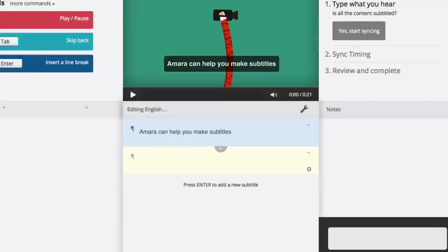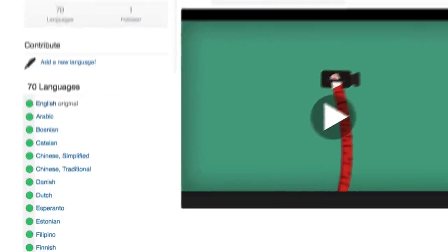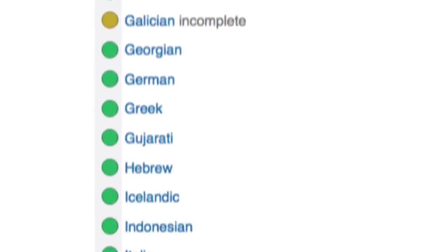First, if you're a video creator, Amara can help you make subtitles with the easiest to learn software in the world. It's collaborative, like Wikipedia, so you can invite friends and audience members to help out.